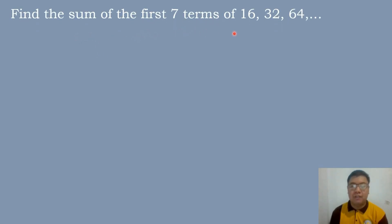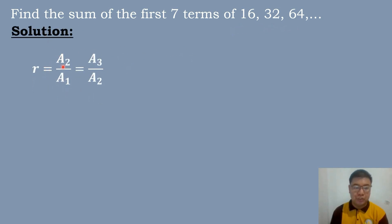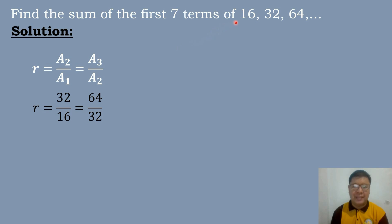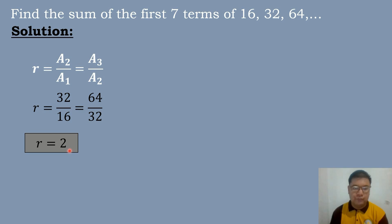Let's have our next example. Find the sum of the first 7 terms of 16, 32, 64. Let's compute for the common ratio: R equals A sub 2 over A sub 1 equals A sub 3 over A sub 2. Substituting: 32 over 16 equals 2, and 64 over 32 equals 2. So the common ratio is equal to 2. Since R is not equal to 1, we will use condition number 1.